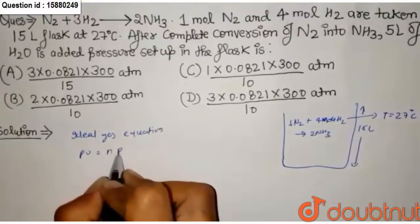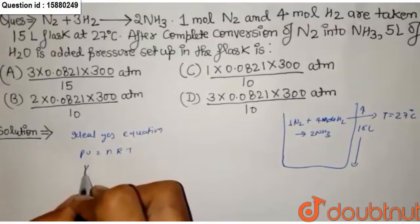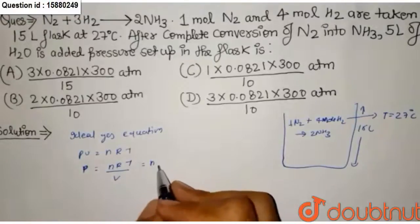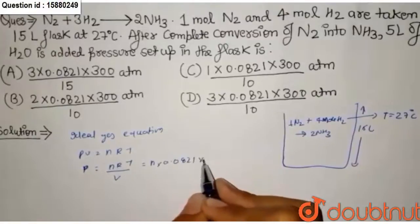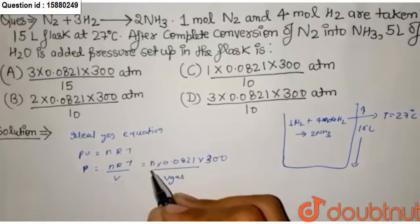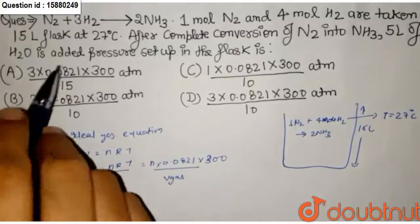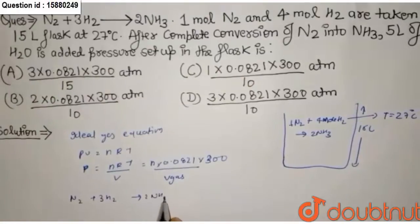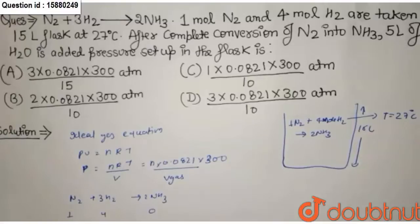So pressure p is equal to nRT by V. We don't know the volume of gas and moles of gas, we will go to the question. N2 plus 3H2 convert into 2NH3, 1 mole and 4 mole. 1 mole is utilized, 3 mole is utilized, 2 mole is formed.